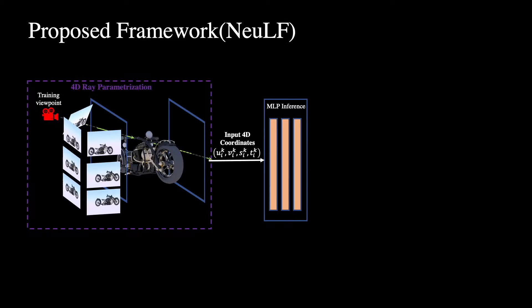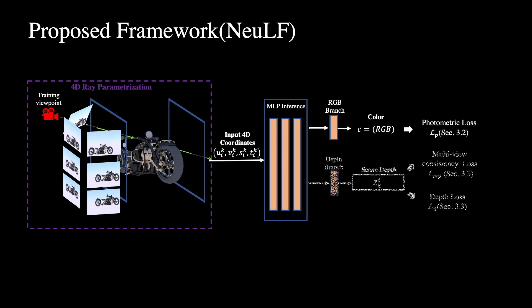Our method achieves state-of-the-art novel view synthesis results while maintaining an interactive frame rate. We illustrate the pipeline of our system. We formulate the mapping function f as a multi-layer perceptron, MLP. The input of this MLP is a 4D coordinate and the output is RGB color. We also optionally estimate per-ray depth by enforcing multi-view and depth consistency. Using depth, applications such as auto-refocus can be enabled.